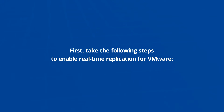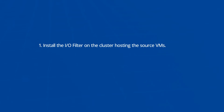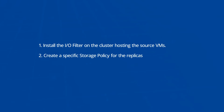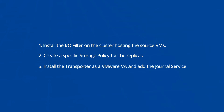First, take the following steps to enable real-time replication for VMware. One, download and install the I/O filter from Nakivo Director on the cluster hosting the source VMs. Two, create a specific storage policy for VMs intended for real-time replication. Three, ensure a transporter is installed as a VMware virtual appliance on the target ESXi host and install the journal service on this virtual appliance.